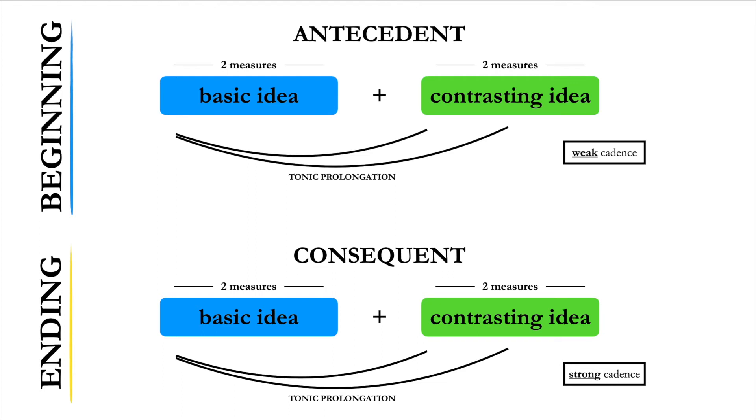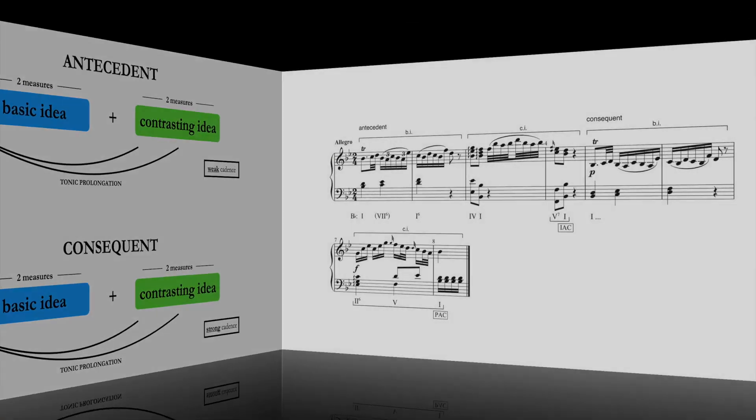The complementary nature of these two formal functions, antecedent and consequent, gives the period form a sense of balance and symmetry, which contrasts markedly with the highly vectored, forward-driving nature of the sentence form. As you listen to the following examples, make special note of their cadential and melodic symmetry.